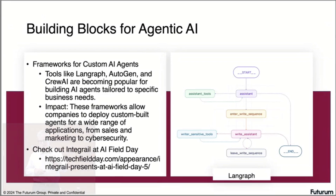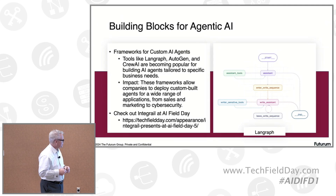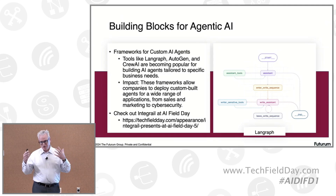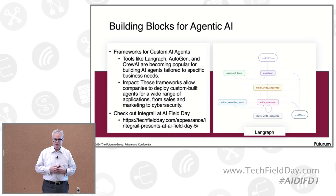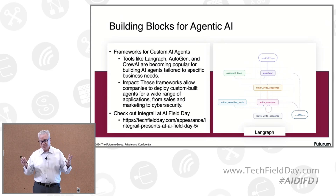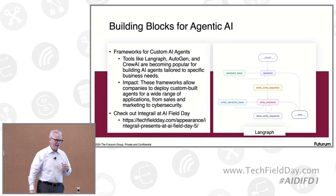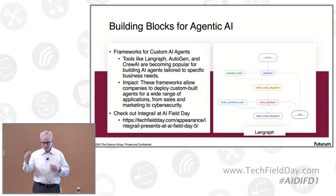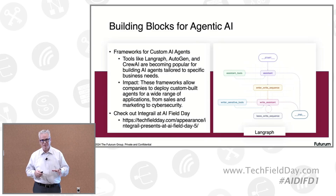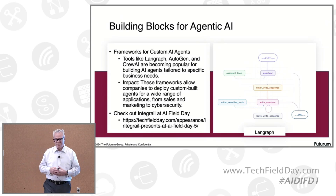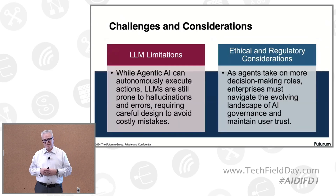There are a lot of frameworks and toolkits out there. This graph came from LangGraph, for example, which is a toolkit for working with these things. We've got Autogen, which is an open source project from Microsoft. We've got Crew AI, which has been getting a lot of buzz as a SaaS platform that businesses are using to build their own AI agents. These frameworks are allowing companies to roll this stuff out really quickly. Essentially, there was no agentic AI last year at this time, and this year there are SaaS platforms being used by some of the biggest names in the industry. We actually just had a company, Integral, present at AI Field Day talking about building an agentic AI platform as well.